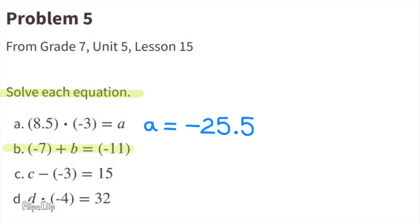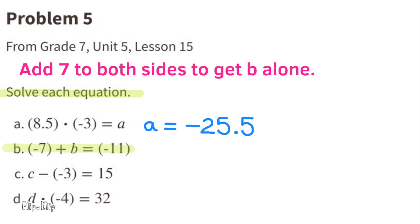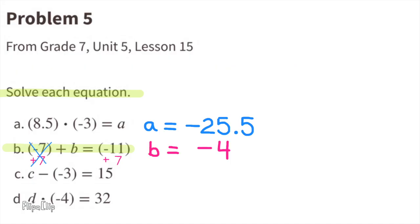B: negative 7 plus B equals negative 11. If you add 7 to both sides, you can get B alone. Negative 7 plus 7 cancels each other out, and negative 11 plus 7 is negative 4. B equals negative 4.